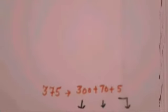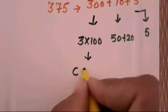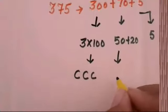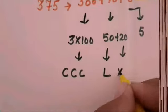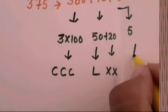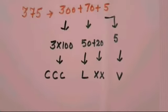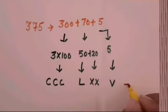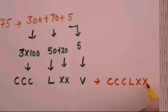The representation of 100 is through C, so we write CCC. 50 is represented by L, and 20 is represented by XX, and 5 is represented by V. So the overall representation of 375 will be CCCL XX V.